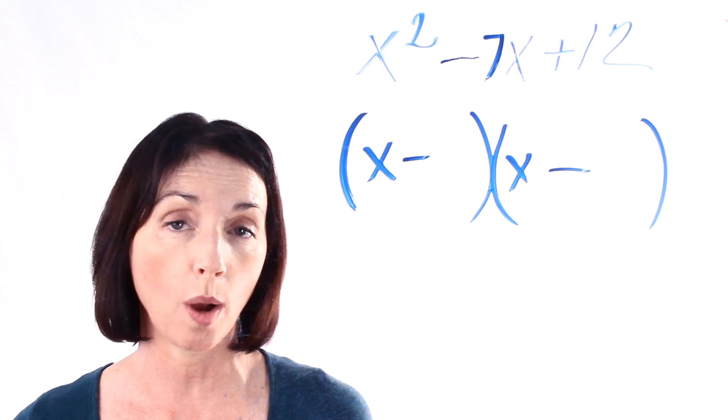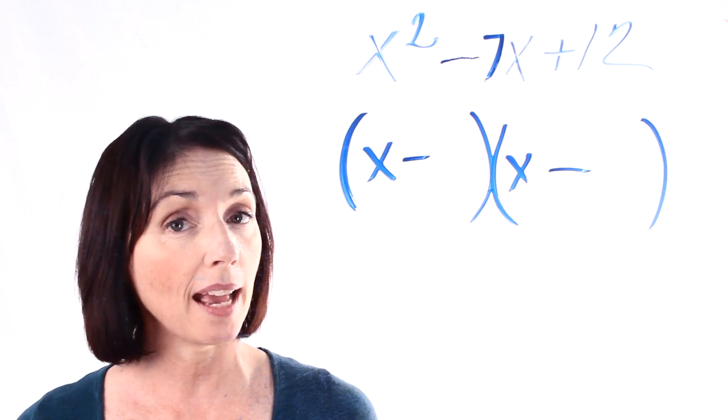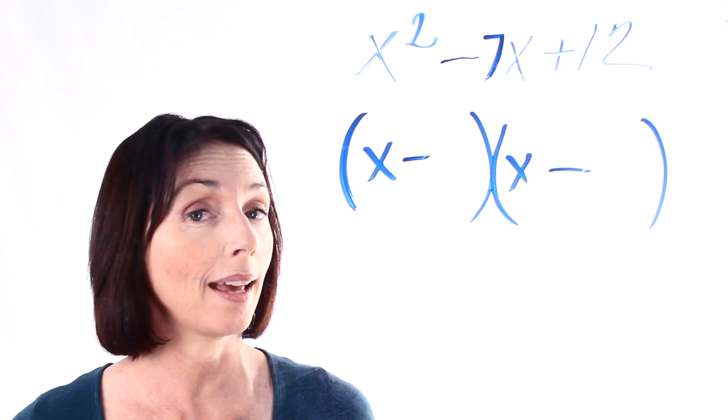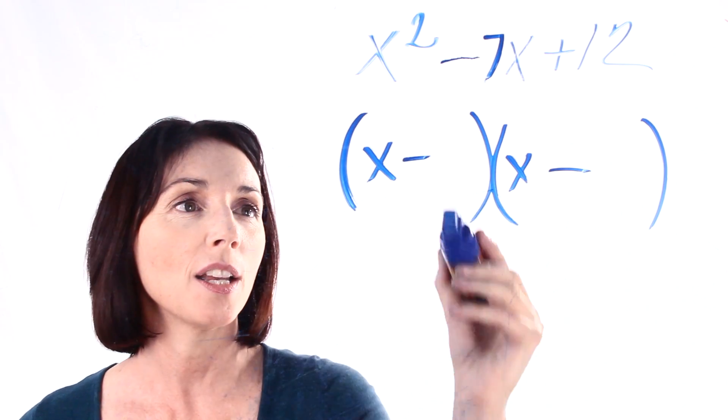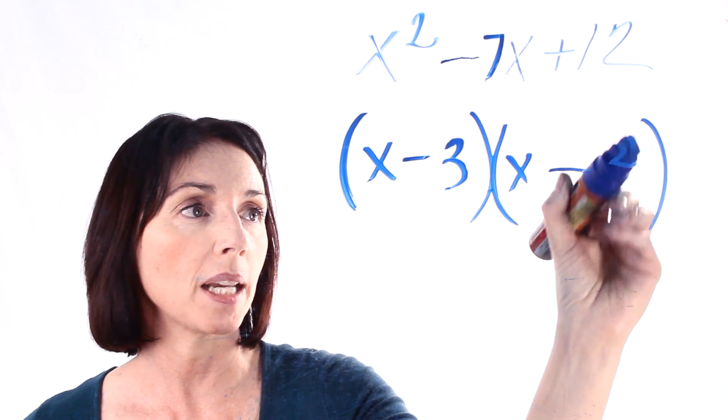So the factors of 12 are 1 and 12, 2 and 6, and 3 and 4. 3 and 4 when added together equals 7. And if we add a negative 3 and a negative 4 we'll get our negative 7. So what we end up with here is x minus 3 times x minus 4.